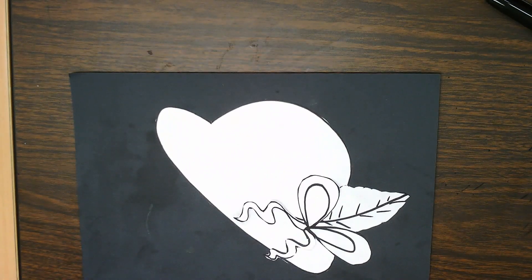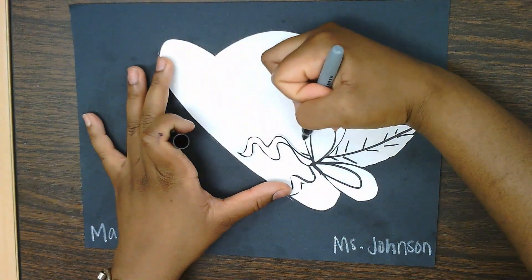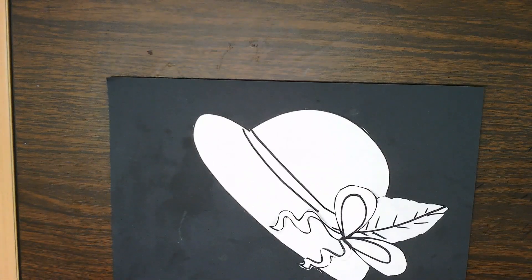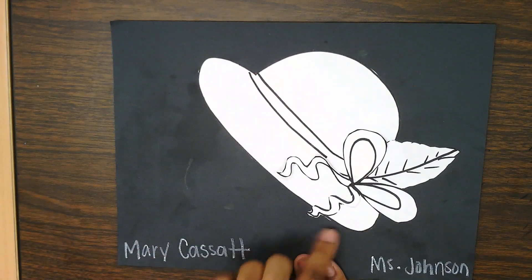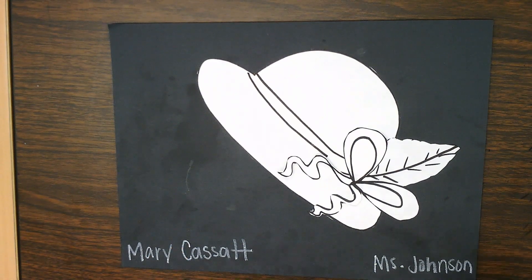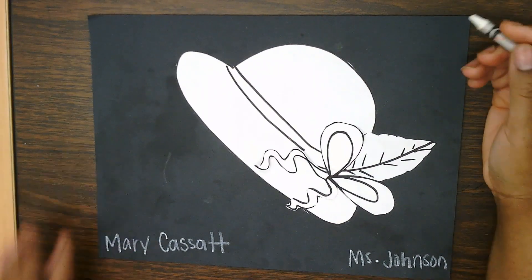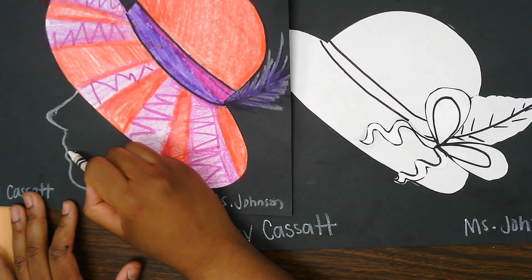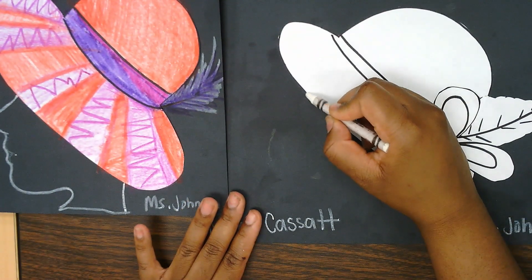Now we're ready to color in our hat. You can always add more designs to it. Since I did a ribbon, I'm going to draw a big ribbon going across the middle of my hat and then color it in. Since we do have our white crayon, we can also add a face here if you'd like. My younger students, you don't have to, but if you'd like to try, we can give it a try. We're going to add a silhouette — a silhouette is the side of your face: a nose, a lip, just the shape, and then a chin.